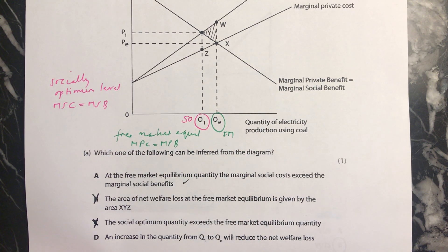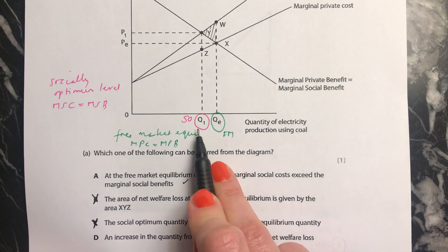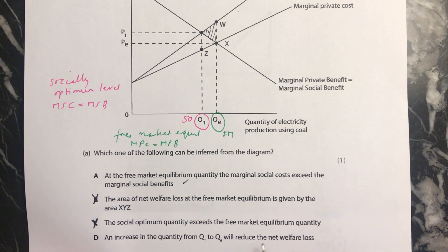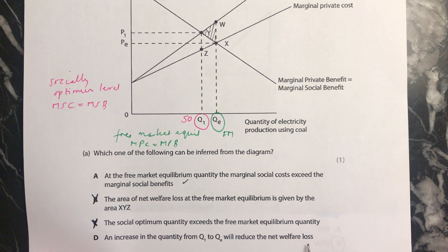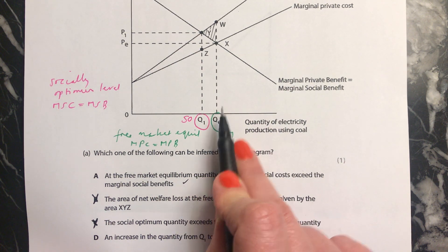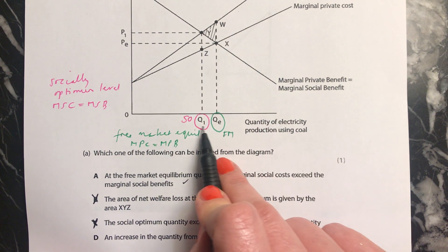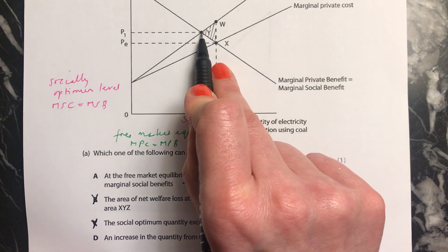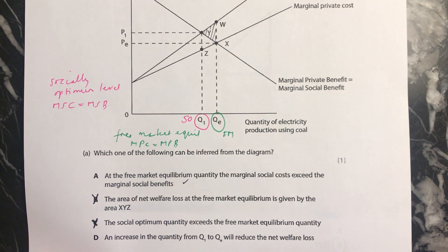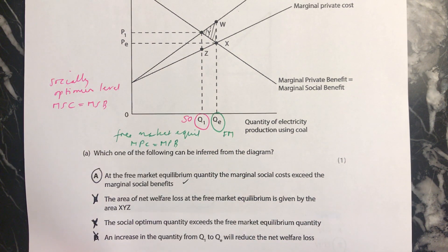The last option: an increase in quantity from Q1 to QE — from here to here — will reduce the net welfare loss. It won't. The further we are over here, the bigger the net welfare loss. The closer we are to Q1, the smaller the net welfare loss. So this isn't true either. The answer is A.